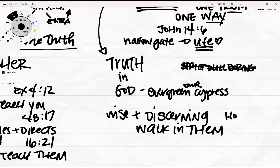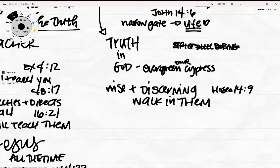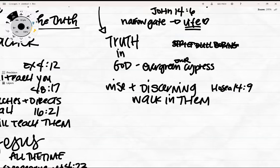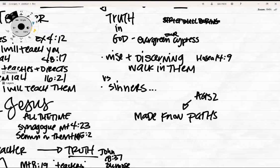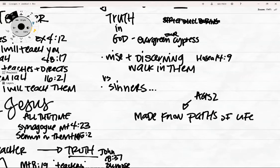Hosea 14:9. Those who sin won't get it. They stumble in the right ways because they're going the opposite direction. Their hearts aren't wanting to follow the right way. But as it said in Psalm 16, and then repeated in Acts 2, You have made known to me the path of life. You will make me full of gladness with your presence.